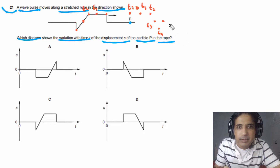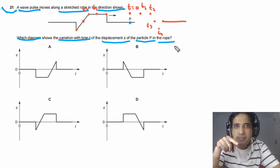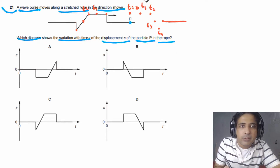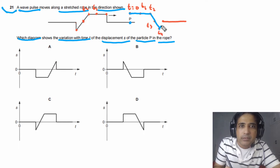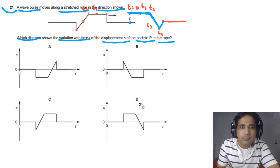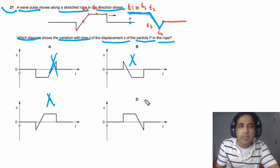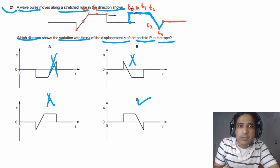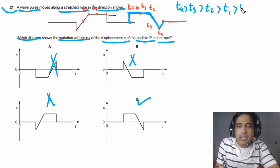After the wave passes, it simply stays the same — its displacement does not change. We need to connect these points to see how displacement is changing with time. Matching this to the given options: A is not possible, B is not possible, C is not possible, and D is the possible answer. You also need to understand that t4 is greater than t3, t3 greater than t2, t2 greater than t1, and t1 greater than t.